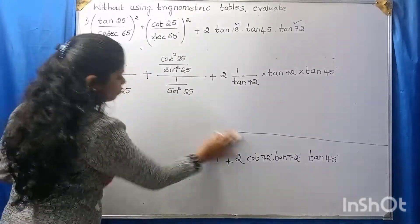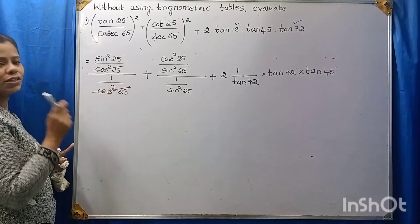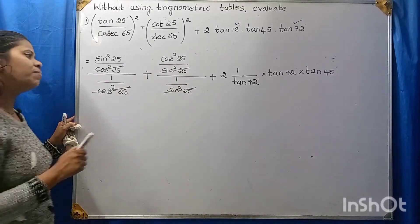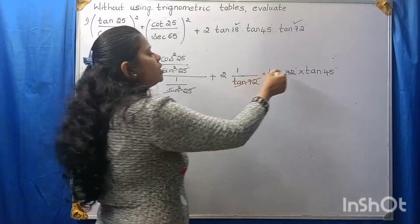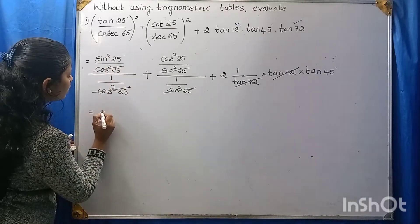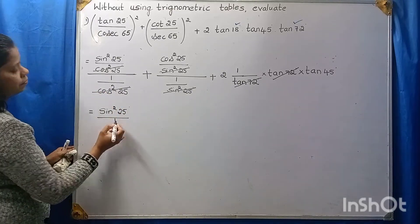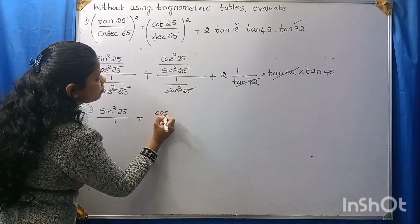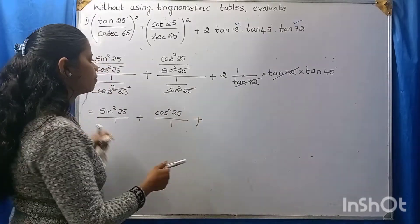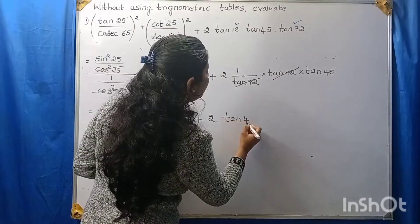Now look at this. Cos²25 and cos²25 will get cancelled. Sin²25 and sin²25 will cancel. Also tan 72° and tan 72° will get cancelled. What is left? Sin²25° divided by 1, plus cos²25° divided by 1, plus 2 into tan 45°.